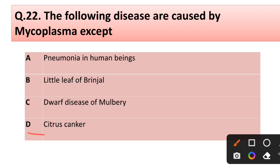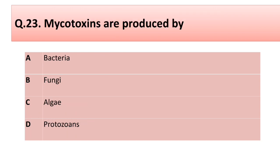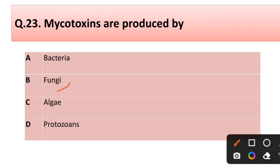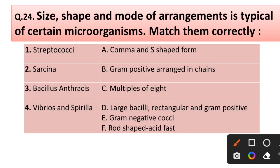Correct answer is option D: citrus canker. Question number twenty-three: mycotoxins are produced by — options: (a) bacteria, (b) fungi, (c) algae, (d) protozoans. Correct answer is option B: fungi. Question number twenty-four: the size, shape and mode of arrangement is typical of certain microorganisms — match them correctly.